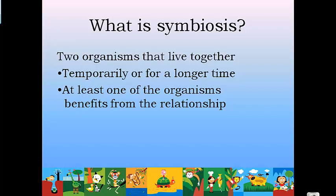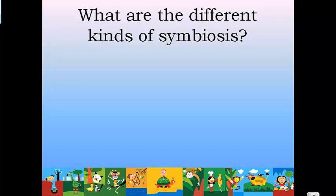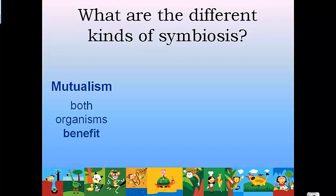For instance, you cannot say that two parakeets have a symbiotic relationship if they live together and lay eggs, because they're the same type of organism. To have a symbiotic relationship, you have to have two different types of organisms — for instance, a tapeworm and a dog, or a cat and a bird. And at least one of them has to benefit from living together.